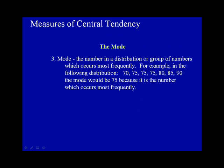The mode. The mode is the number in a distribution or group of numbers which occurs most frequently. For example, in the following distribution — 70, 75, 75, 75, 80, 85, and 90 — the mode would be 75 because it is the number which occurs most frequently.